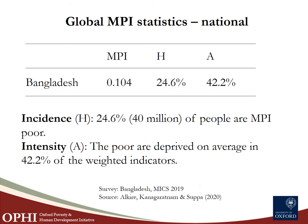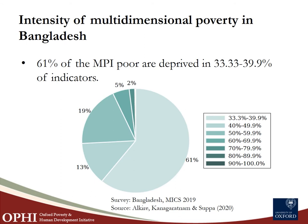Among the 40 million poor in Bangladesh, just under two-thirds are deprived in greater than 33.3% but less than 40% of weighted indicators, while 2% are deprived in 90–100% of weighted indicators. A person deprived in 90% of indicators has greater intensity than someone deprived in 40%. Countries may have similar incidence of poverty, but different patterns of intensity — countries with higher intensity will have a higher MPI value.